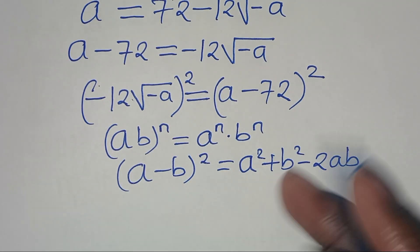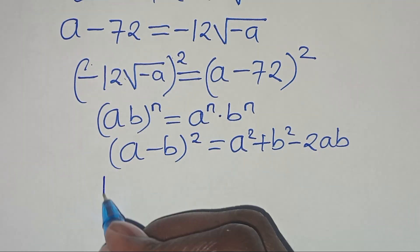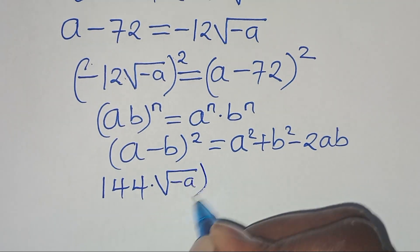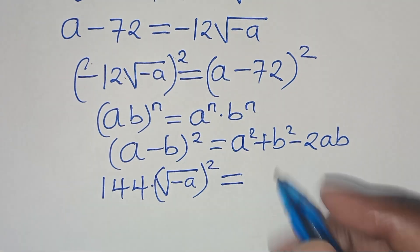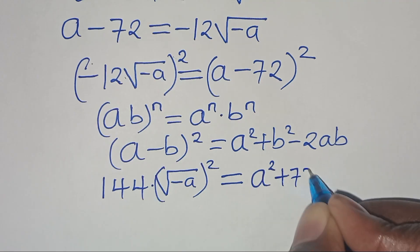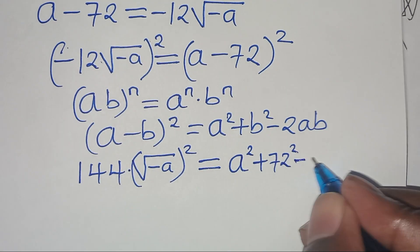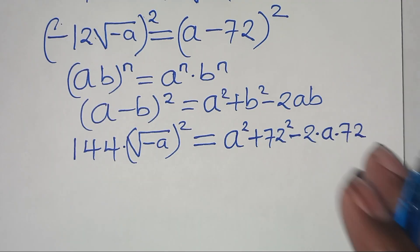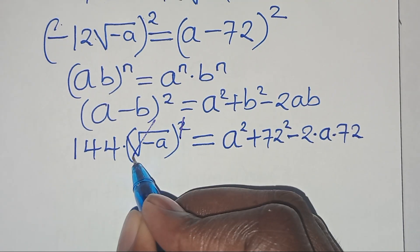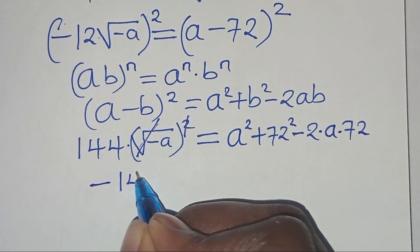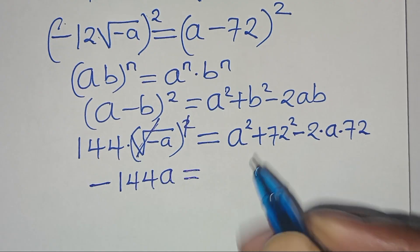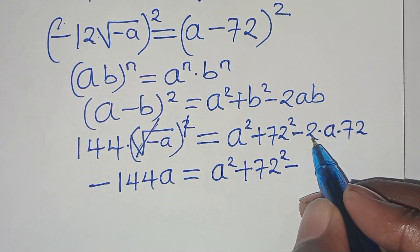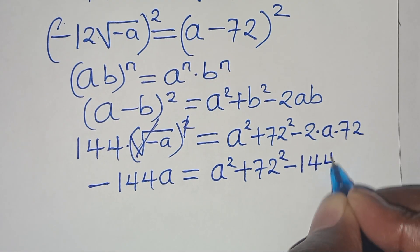Applying these two exponent properties: (−12)² = 144, times (√(−a))² = −a, gives 144·(−a) = −144a on the left. On the right we have a² + 72² − 2·a·72, which is a² + 72² − 144a. So we have −144a = a² + 72² − 144a.